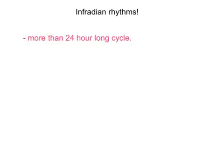Now we are going to cover infradian rhythms in more detail. These biological rhythms have a periodicity of more than one day, such as the female menstrual cycle of 28 days and hibernation. We saw earlier that hibernation would seem to be a sensible adjustment to severe winter weather and lack of food. However, squirrels kept in a laboratory also show the hibernation pattern, and we can therefore conclude that it must involve both zeitgebers and a pacemaker to control this rhythm.